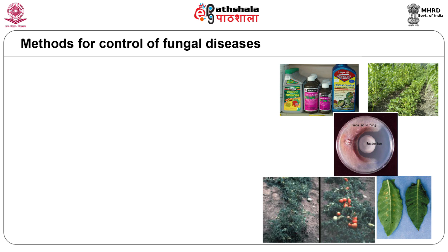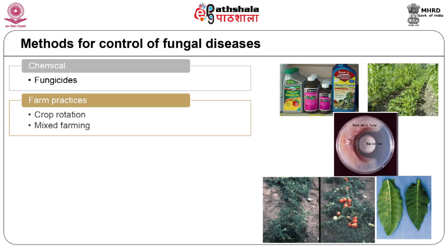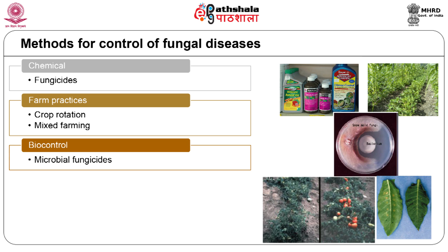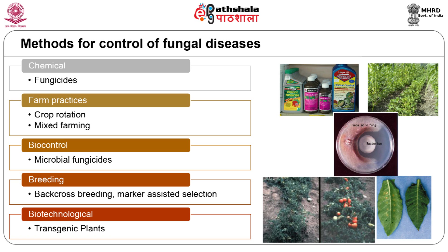Currently, there are a number of strategies employed to prevent pathogen attack in field crops. Chemical fungicides are widely used but their extensive use has resulted in environmental and health hazards. Alternative farm practices like crop rotation and mixed farming with different crop species reduce the development of resistance in pathogens. Fungal antagonists, which consist of microbes that inhibit the growth or kill the fungal pathogens, are used as a method of biological control. Breeding practices like backcross breeding and marker-assisted selection are used to transfer resistant traits in crop species. Genetic engineering is an alternative strategy for control of diseases and an important component of disease management strategies.